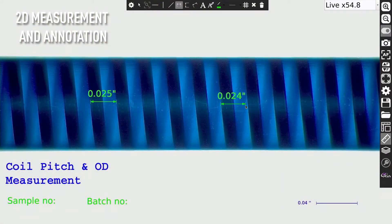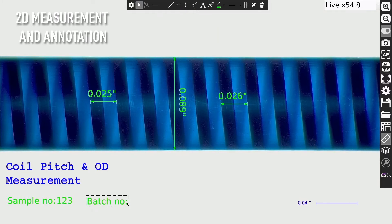2D point-to-point line measurements can be performed and annotations can be captured on images for quick referencing.